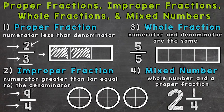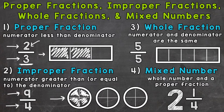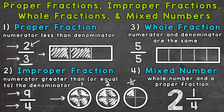Improper fractions represent a value greater than or equal to a whole. Let's model nine-fourths. We have some circles cut into fourths, and we need to fill in nine-fourths — nine sections, each being worth a fourth. So one, two, three, four, five, six, seven, eight, and nine. You can see that we needed more than a whole. Nine-fourths represents a value greater than one whole — we have one, two full wholes, and then not quite enough for another whole, so that's a fourth.